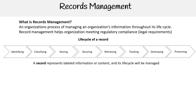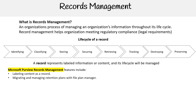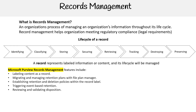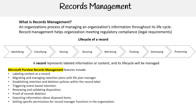A record represents labeled information or content and its lifecycle will be managed. Microsoft Purview records management includes many features including labeling content as a record, migrating and managing retention plans with file plan manager, establishing retention and deletion policies within the record label, triggering event-based retention, reviewing and validating disposition, proof of records deletion, exporting information about disposed items, and setting specific permissions for record manager functions in the organization.